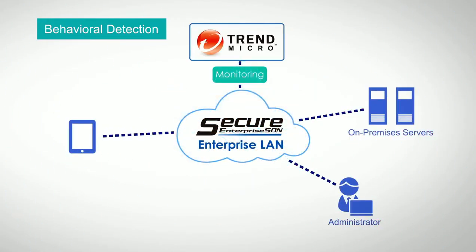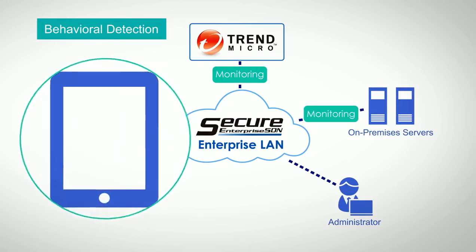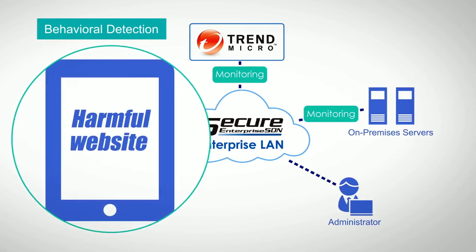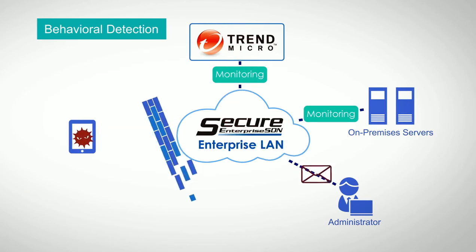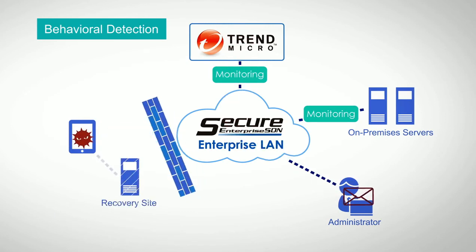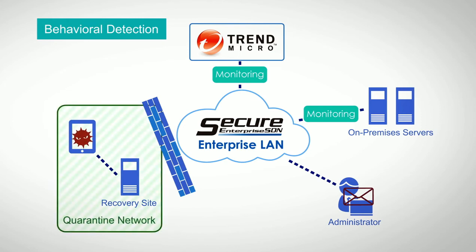SCS has the answer to change the situation. The behavioral detection monitors network traffic in real time. For example, when a user accesses a harmful website and is suspected to be infected with malware, SCS identifies the infected device and automatically isolates it in a quarantine or recovery network in order to prevent an IT incident.